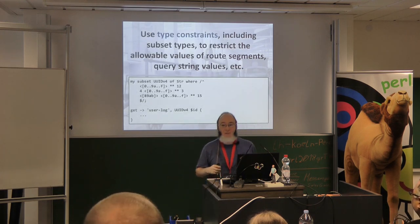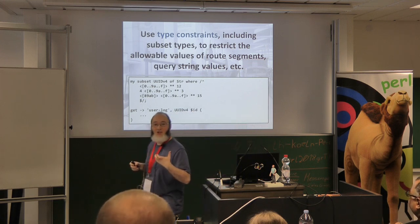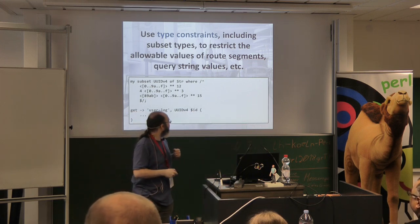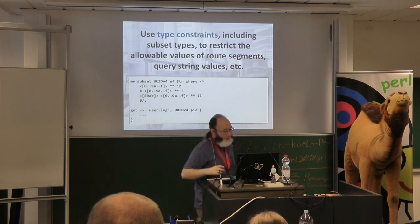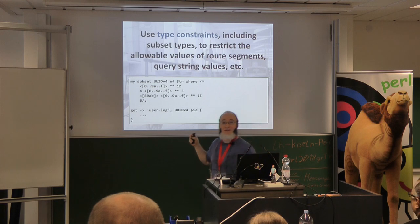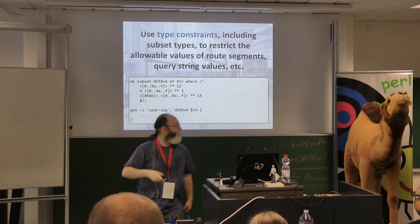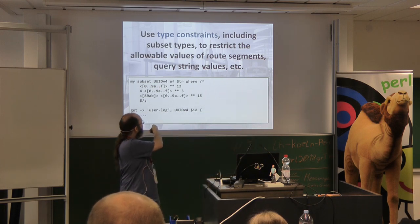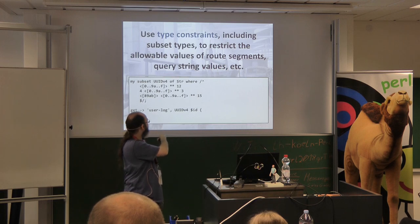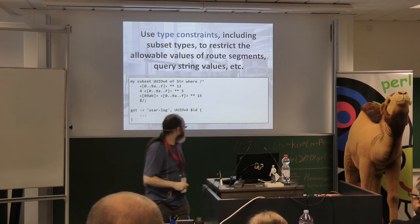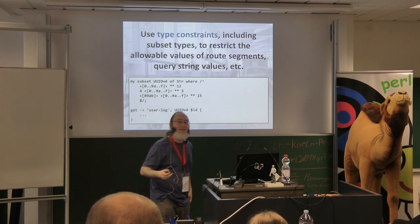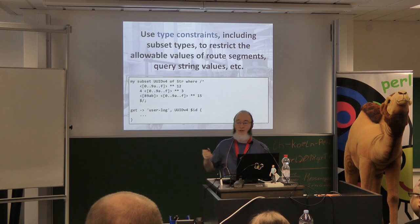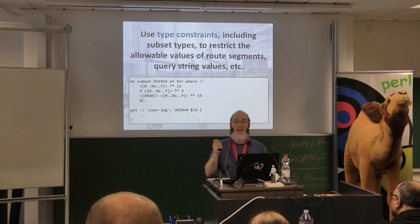Since it's a Perl 6 signature, you can stick types in there. Suppose I only want this to match — and produce a 404 if not — for a valid UUID. I write 'subset UUIDv4 of Str' with a regex, stick it in the signature, and that validates the route parameter. You can also use built-in types like Int and UInt for that.